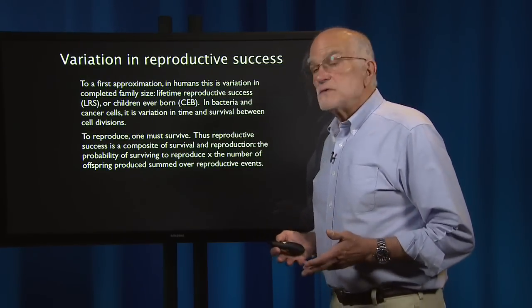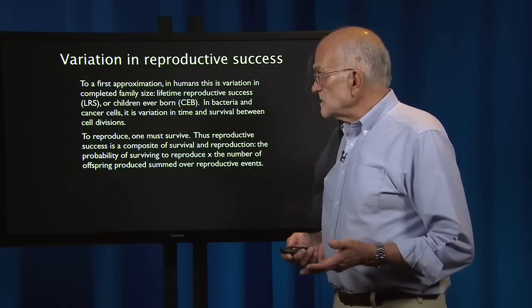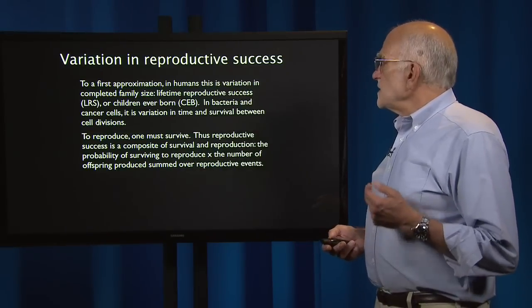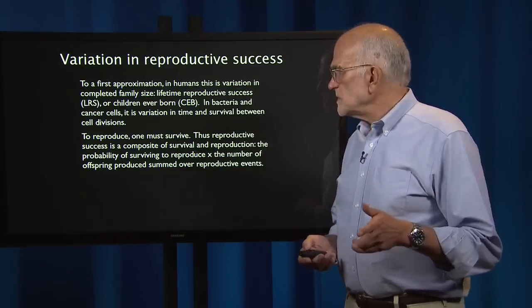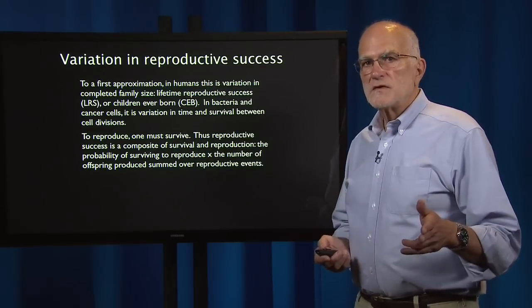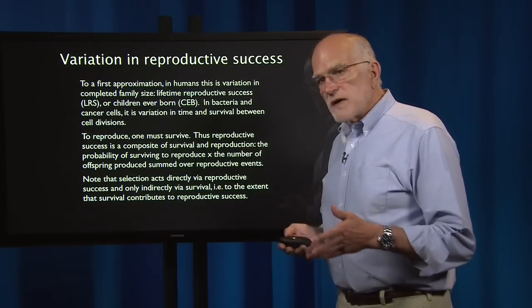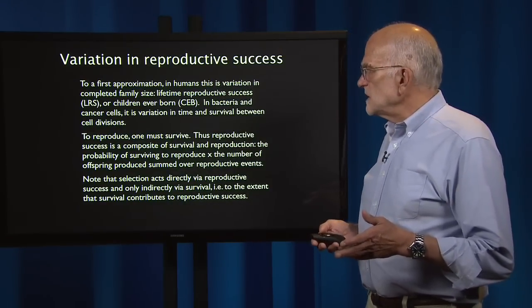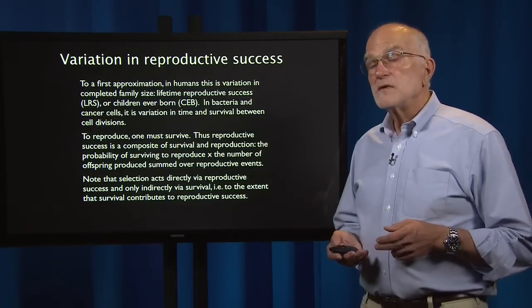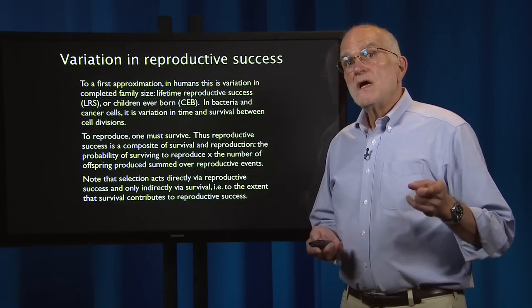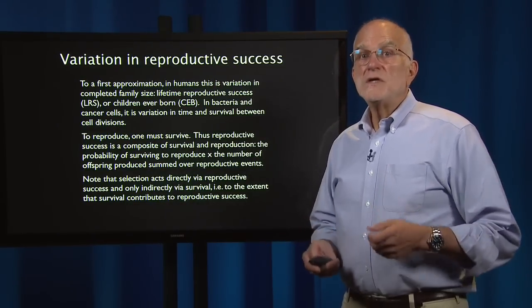To reproduce, one must survive. Thus, reproductive success is a composite of survival and reproduction — the probability of surviving to reproduce times the number of offspring produced, summed over the reproductive period. Selection acts directly via reproductive success and only indirectly via survival, to the extent that survival is contributing to reproductive success. This is an important point, and it's because of this distinction that we can see how aging evolves.